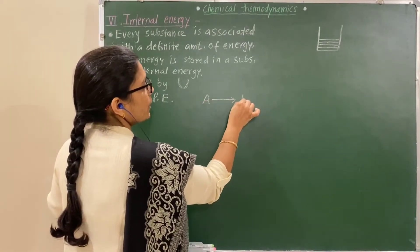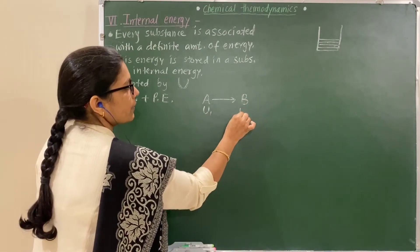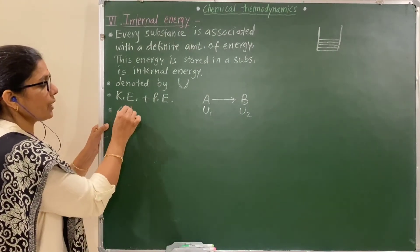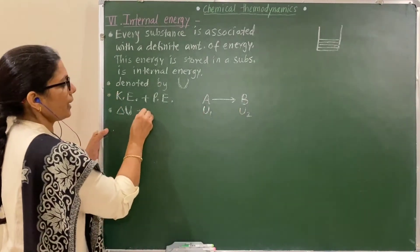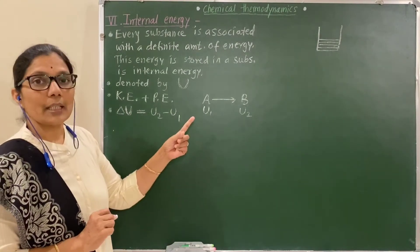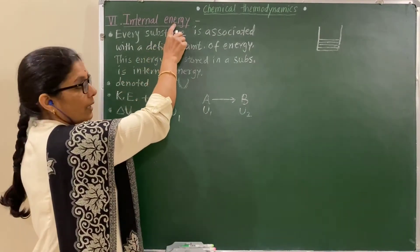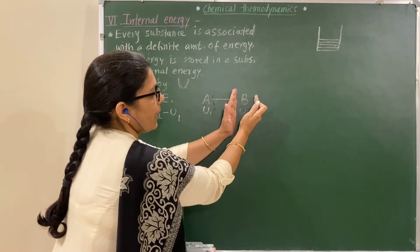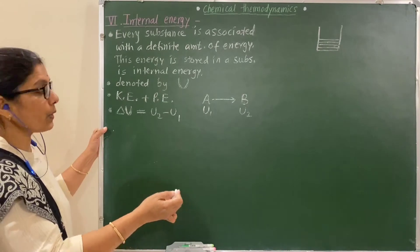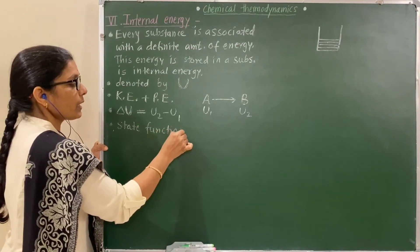Consider a process where A is converted into P. The initial state has internal energy U1 and the final state has internal energy U2. Then the change in internal energy, delta U, equals U2 minus U1. Internal energy depends only on the initial and final states — not on the path or process by which it is carried out. Therefore, it is a state function.